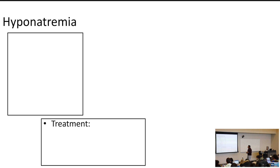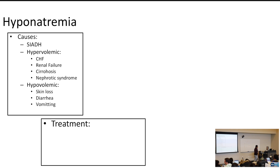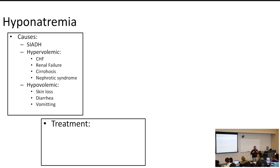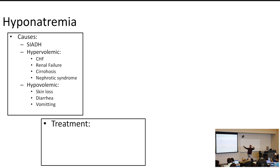Now let's talk about hyponatremia. One cause we talked about was SIADH. For sodium abnormalities, we define them via volume status. Hypervolemic hyponatremia means you have a lot of fluid on board, which dilutes your sodium concentrations and serum osmolarity. Hypervolemic causes include congestive heart failure, renal failure, cirrhosis, and nephrotic syndrome — you are very volume heavy and thus diluting your sodium.